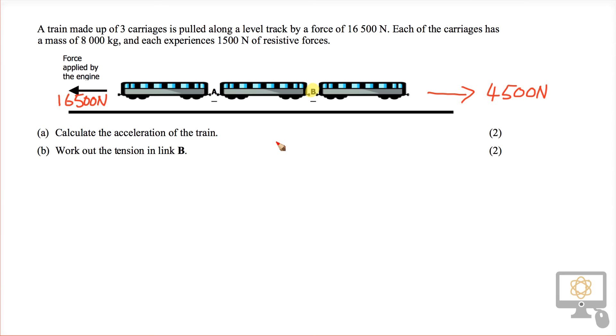Therefore, the total unbalanced force on the carriages is the force of the engine minus the frictional forces.